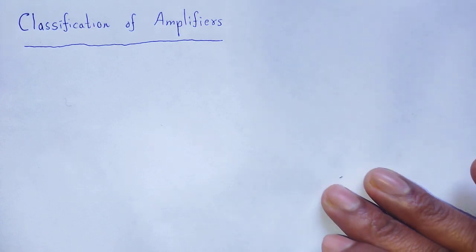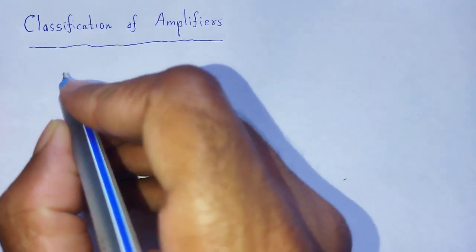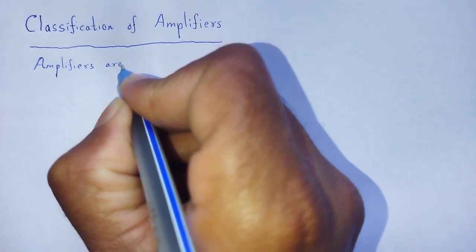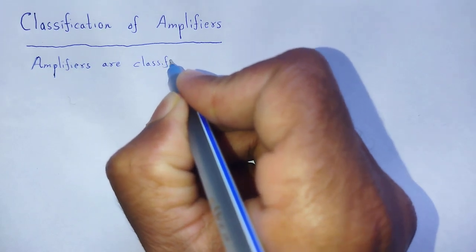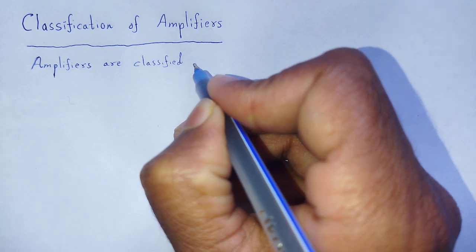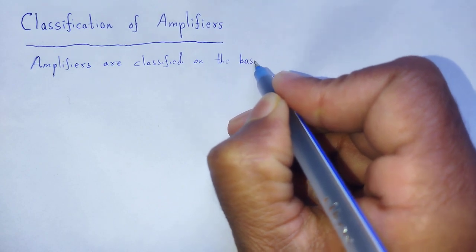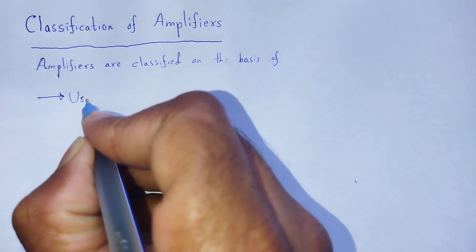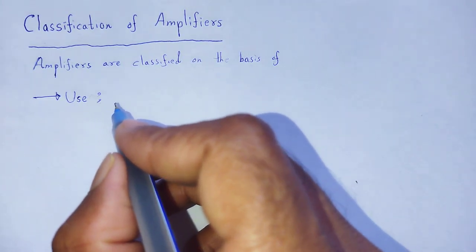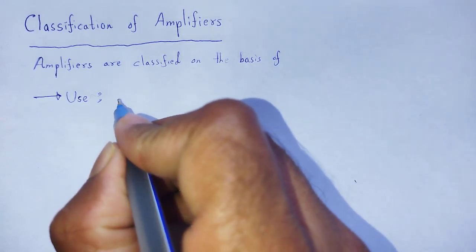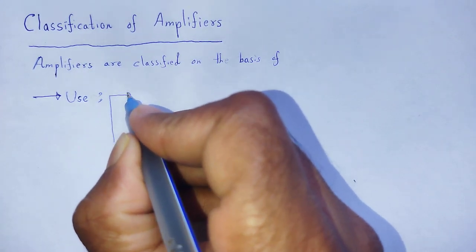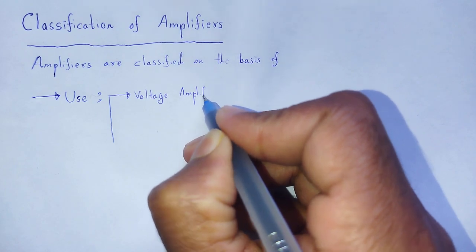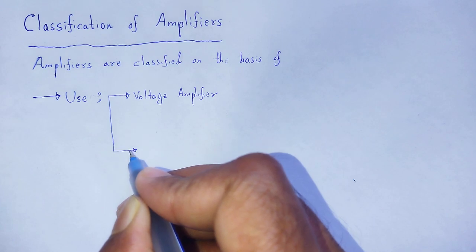The classification of amplifiers — on the basis of use, it is classified as two: one is voltage amplifier, and another one is power amplifier.